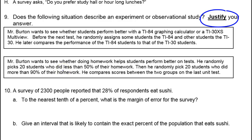The other one is probably going to be an observational study. Mr. Burton wants to see whether doing your homework helps students perform better on tests. He randomly picks 20 students who did less than 50% of their homework and 20 students who did more than 90%, and compares how they performed on the last test. Why is this an observational study? Did Mr. Burton choose — you guys do homework, you guys don't? No. The students chose for themselves whether or not they were going to do their homework, and then they got the consequences. The researcher didn't choose who got which treatment.